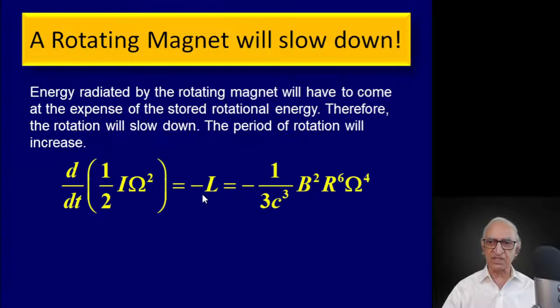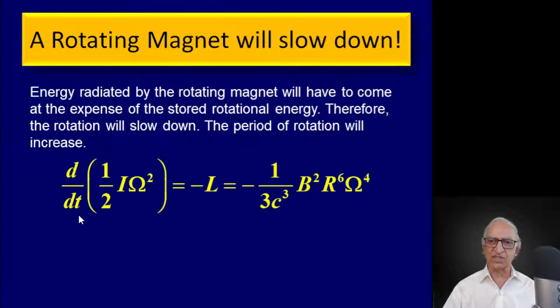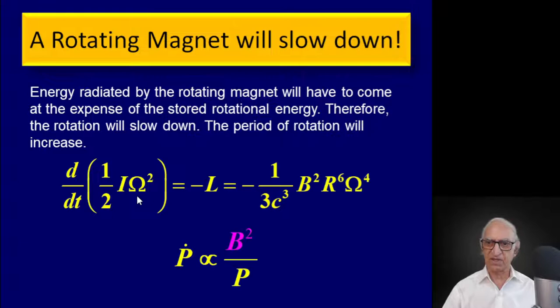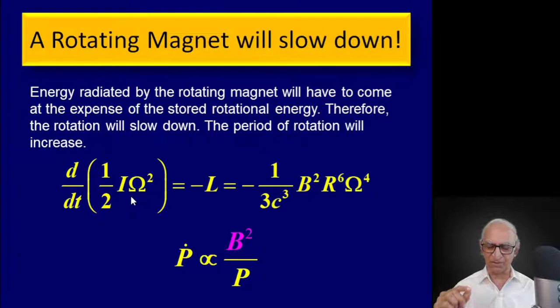The energy radiated by the rotating magnet must come at the expense of the stored rotational energy. The luminosity, with a minus sign indicating energy loss, equals (1/3c³) B² r⁶ ω⁴. This energy must come from d/dt of (½ I ω²), the stored rotational energy of an object with moment of inertia I rotating at angular velocity ω. Differentiating gives I ω ω-dot. Expressing ω in terms of period P (since ω and P are inversely related), I can write the formula in terms of the period derivative P-dot instead of ω-dot.